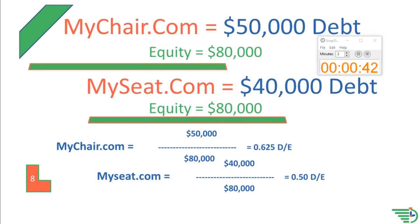Now let's calculate MySeat.com by dividing $40,000 in debt by the $80,000 in equity and we get a 0.5 Debt to Equity Ratio.